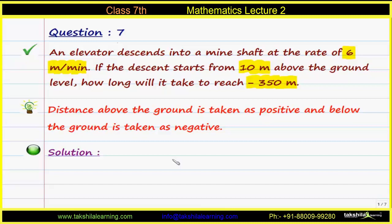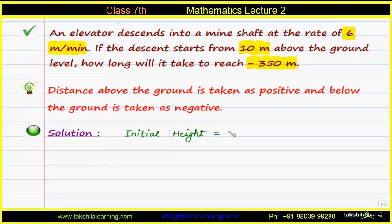Now let us solve this question. We need to find the time which the elevator will take to reach a depth of 350 meters below the ground. The initial height will be taken as plus 10 meters, as this is above the ground — that is why it is positive. The final depth will be taken as minus 350 meters, as this is below the ground.